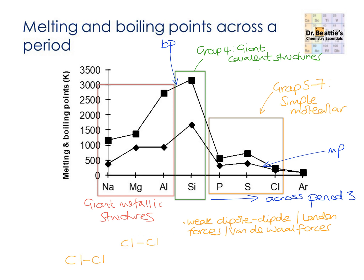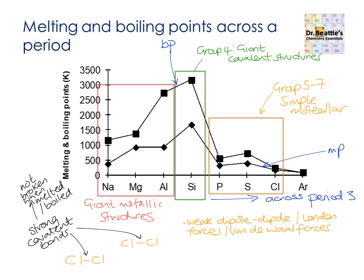Here we have two chlorine molecules, Cl2. These solid lines represent the strong covalent bonds. But unlike a giant covalent lattice structure, when we melt or boil chlorine molecules, it is the weak intermolecular forces between them — which we often show as dashed lines — that break during melting or boiling.